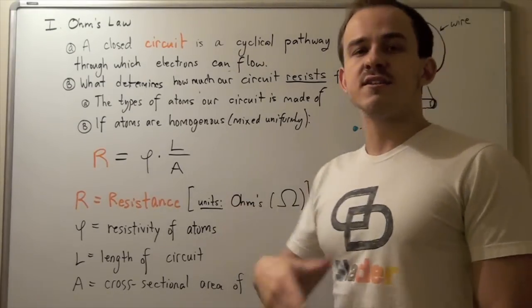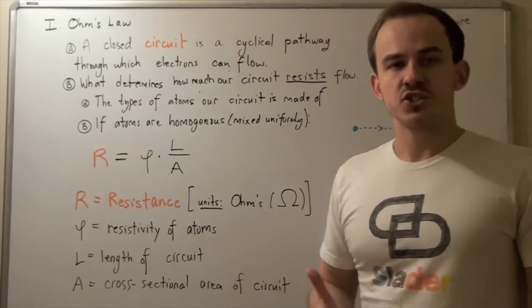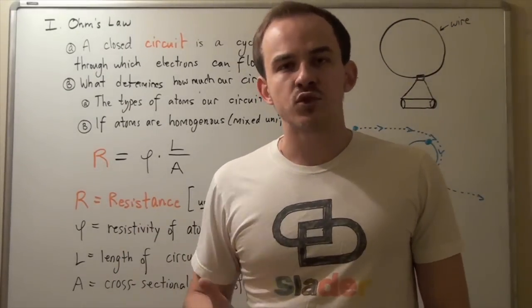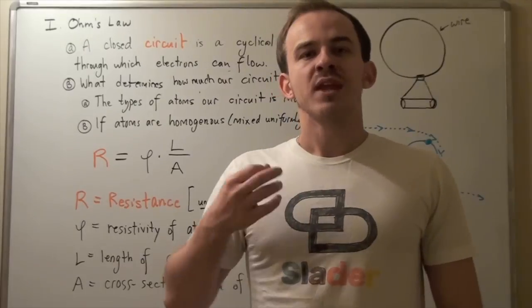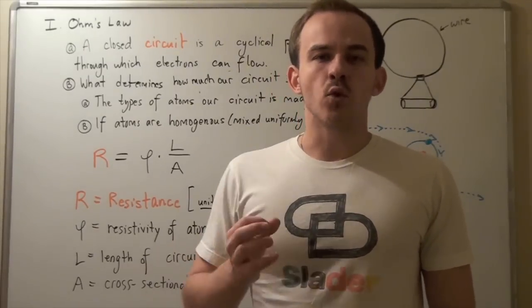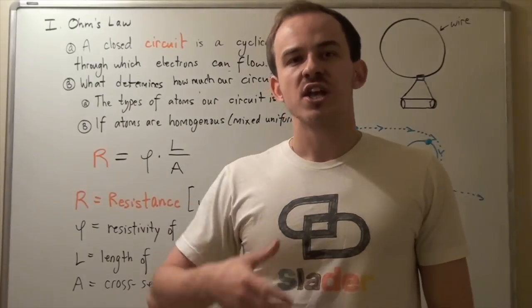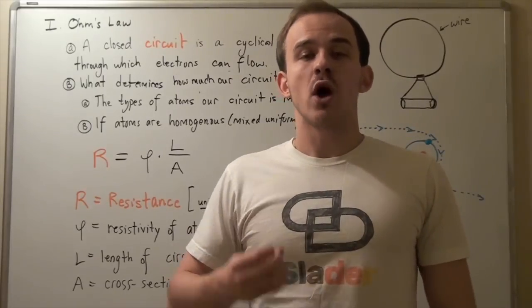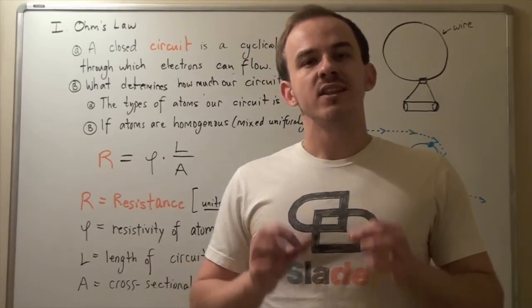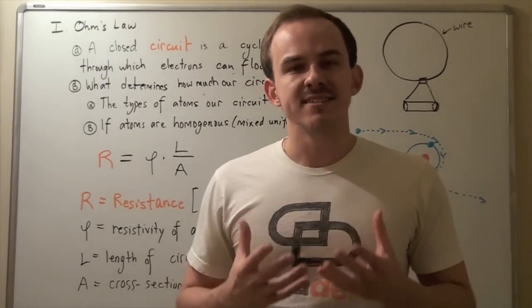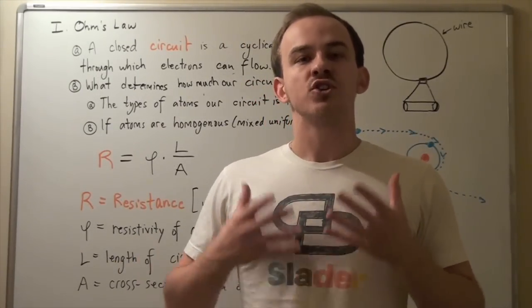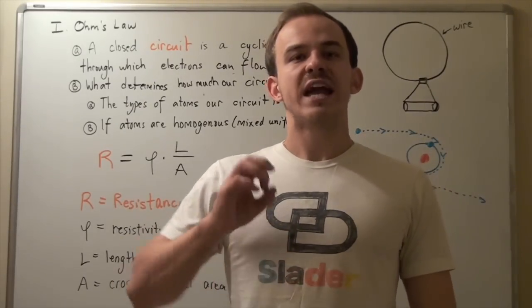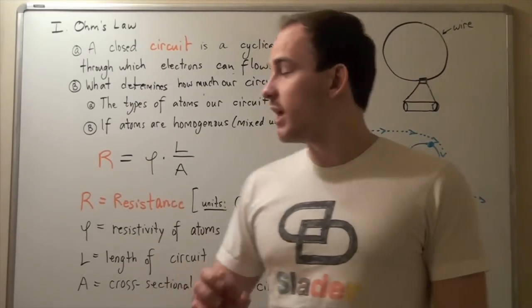What determines the ability with which our electrons flow in our closed circuit? In other words, what are some factors that will affect or impede our electron flow? So now let's look at the resistance that's created by our closed circuit.